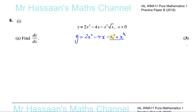We have two terms with the same base multiplied together, so we add the powers: 2 plus a half equals 2 and a half, or 5 over 2. So you get y equals 2x squared minus 4x minus x to the power of 5 over 2.